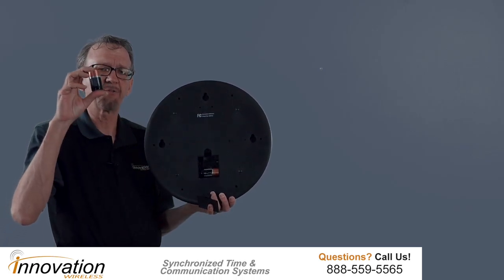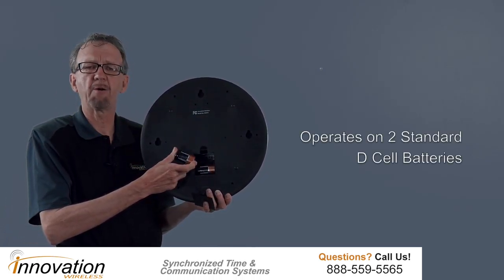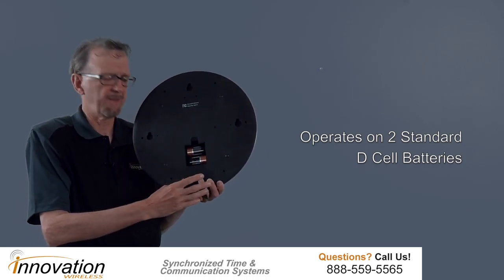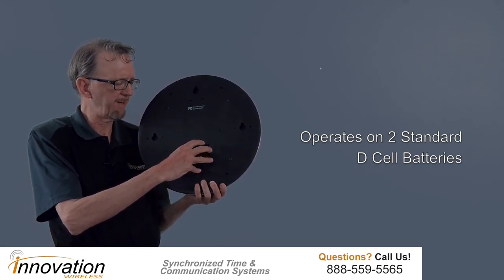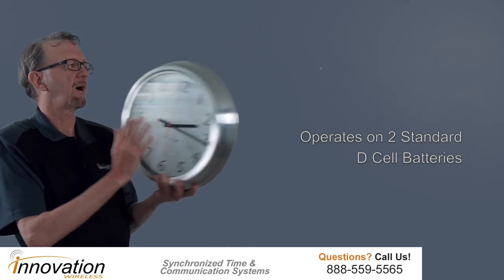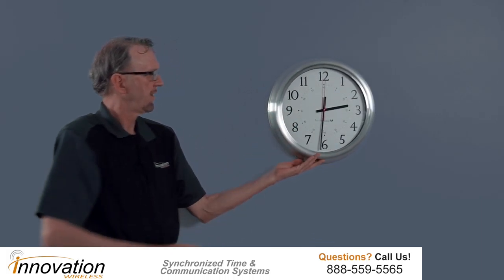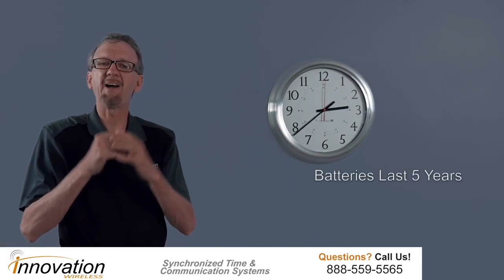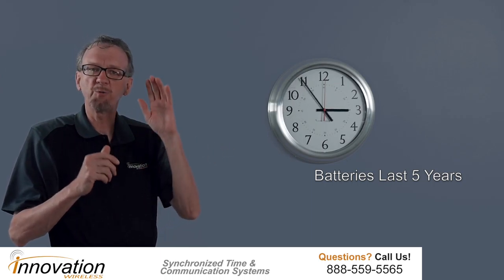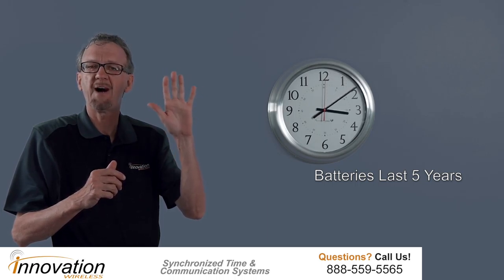Next you'll notice two D cell batteries will fit in this battery compartment. So put two D cell batteries in there, put the battery cover back on, hang this clock back up on the wall where you're going to put it and you won't touch that clock for five years. That's why we say it's virtually maintenance free. Those two D cell batteries will power that clock for five years.